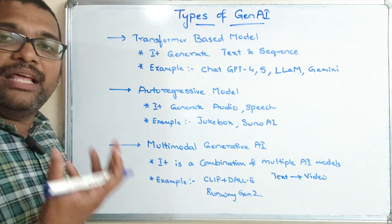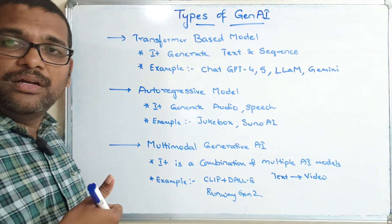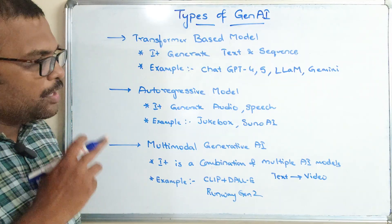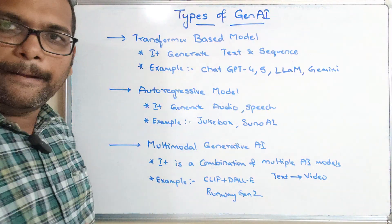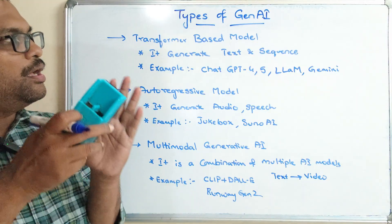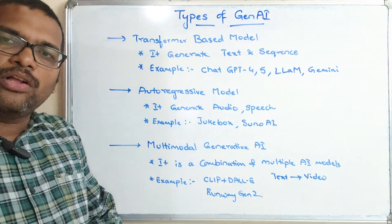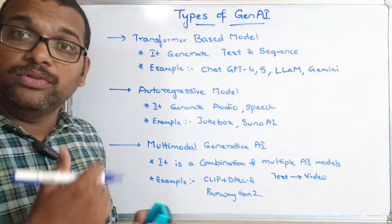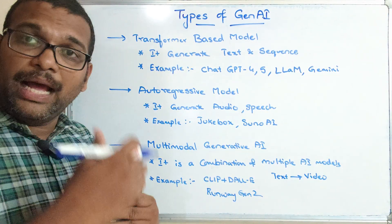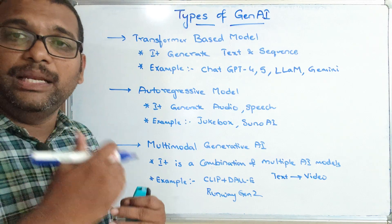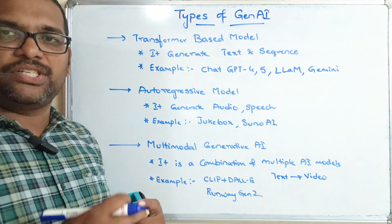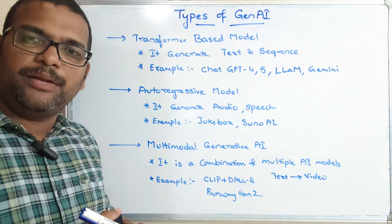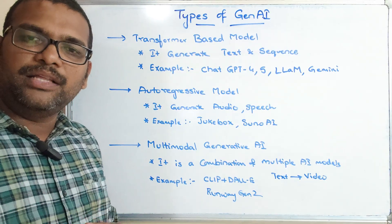So those are the six types of generative AI based upon their usage: Generative Adversarial Networks, Variational Autoencoders, Diffusion Models, Transformer-Based Models, Auto-Regressive Models, and Multi-Modal generative AI. In this video we listed all the generative AI types and a few examples. From the next session we'll cover each type in depth — how the model works, applications, examples, advantages, and limitations. If you enjoyed the session, like, share, and subscribe. Thanks for watching!